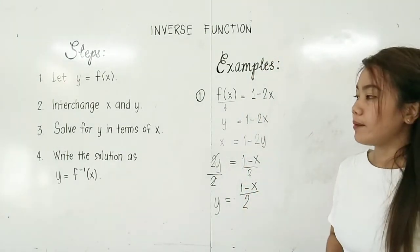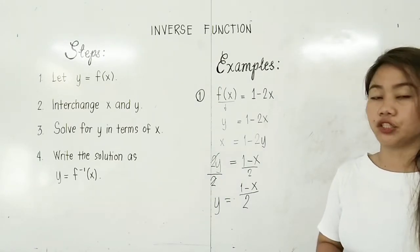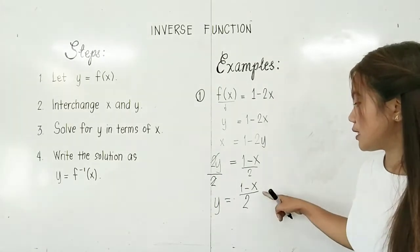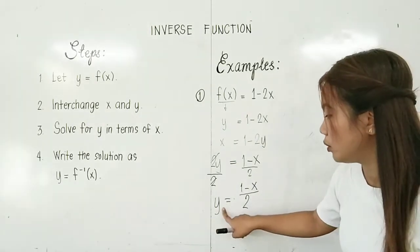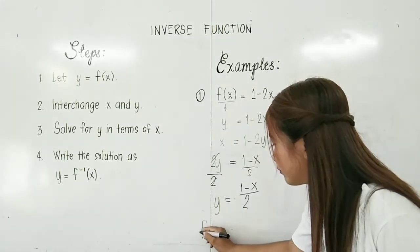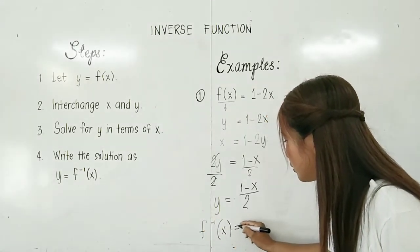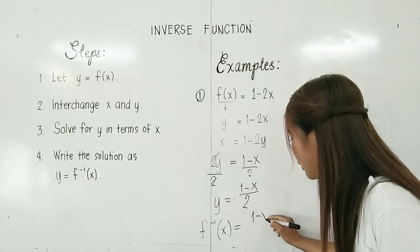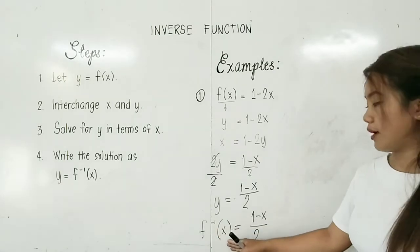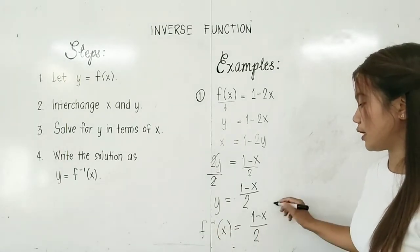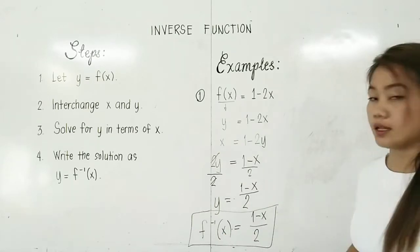Last step: write the solution as y equal to the inverse function of x. So we write f⁻¹(x) = (1 − x) / 2. The inverse function of f is equal to (1 − x) / 2. This is our final answer.